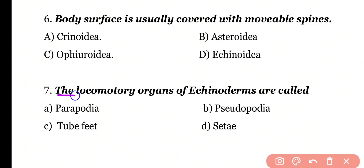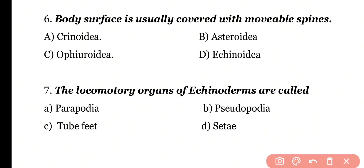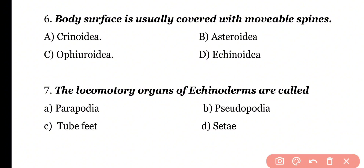Question 7: The locomotory organs of Echinoderms are called Parapodia, Pseudopodia, Tube feet, or Setae? Correct answer is Option C. Tube feet act as the locomotory organs of Echinoderms.